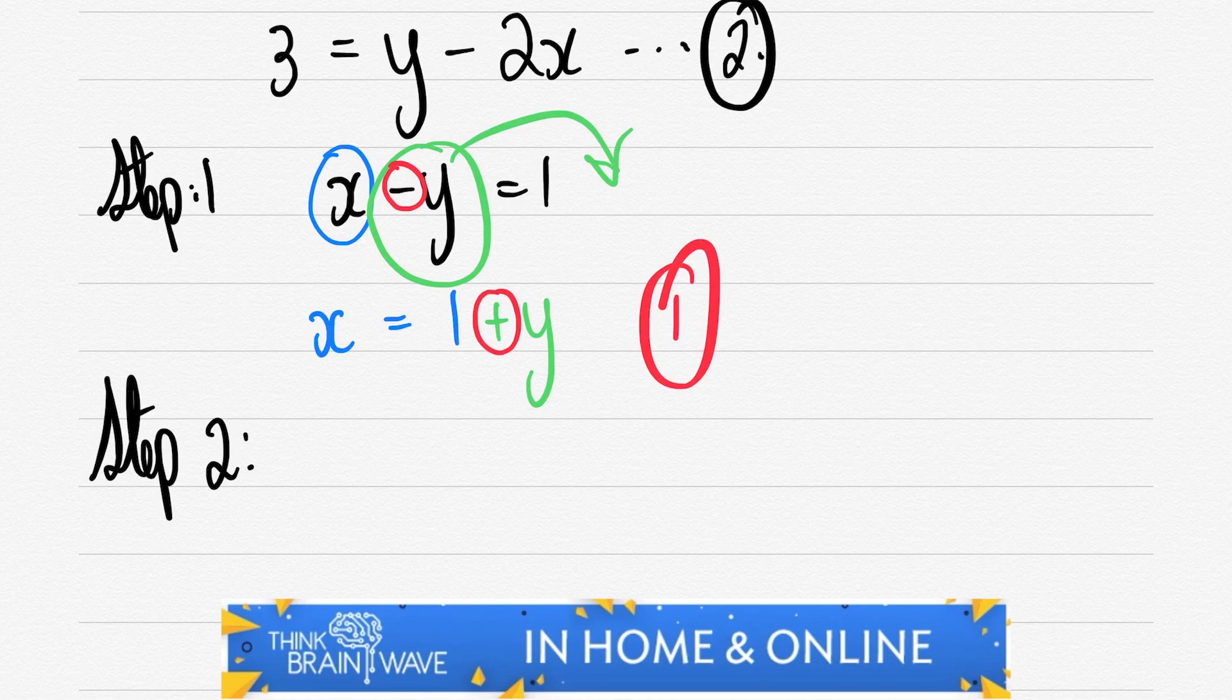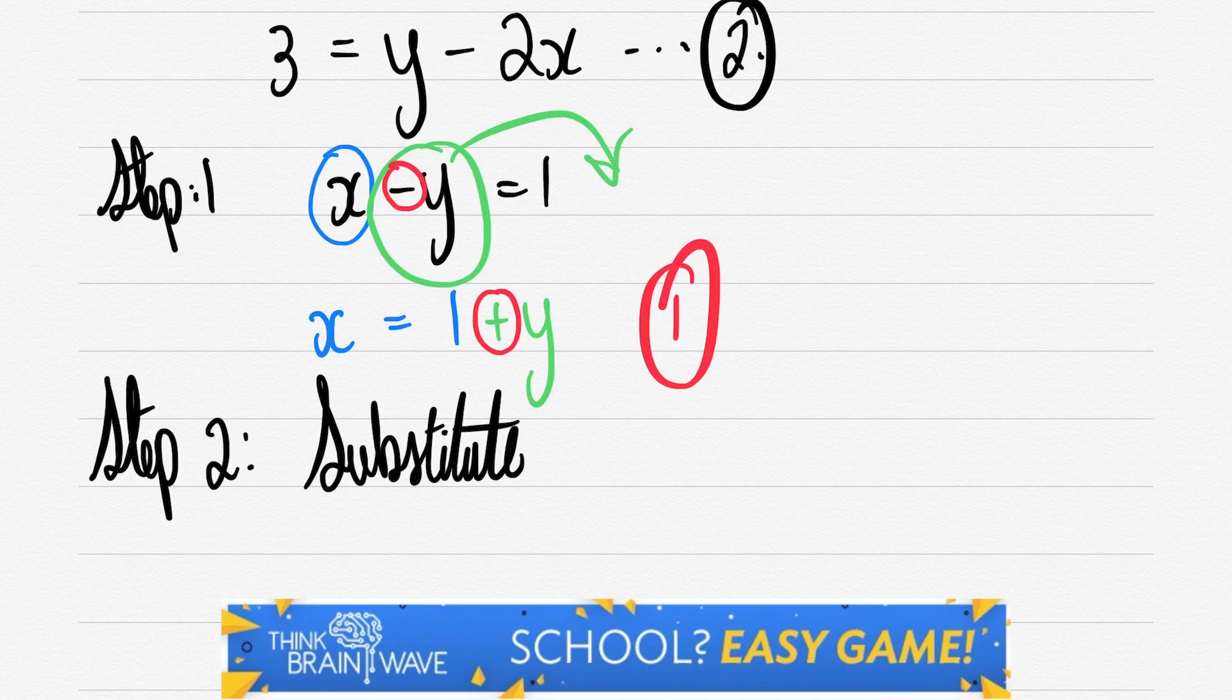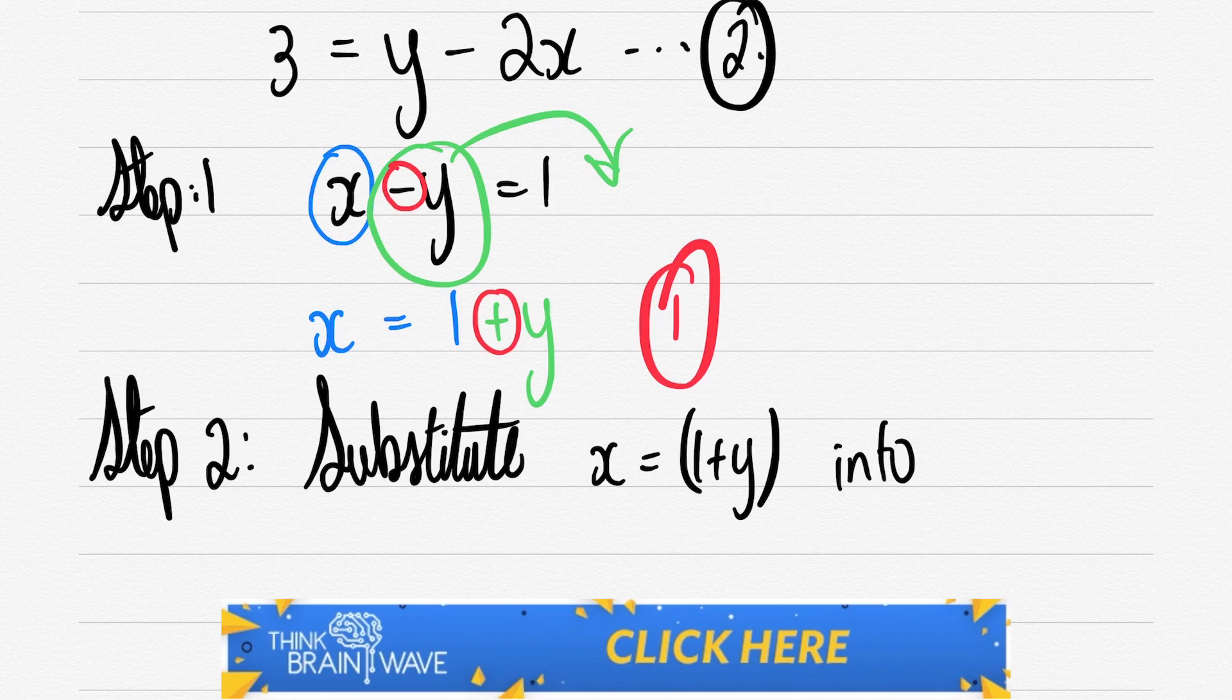All right, step two. We need to substitute x back into the second equation. So wherever there is an x we need to sub in 1 + y into the equation.